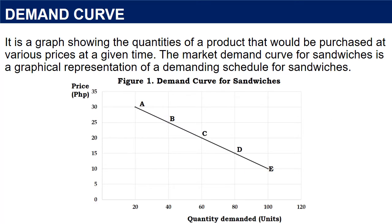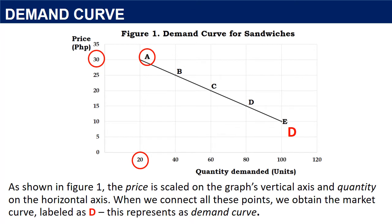A demand curve is a graph showing the quantities of a product that would be purchased at various prices at a given time. The market demand curve for sandwiches is a graphical representation of the demand schedule. As shown in Figure 1, the price is scaled on the graph's vertical axis and quantity on the horizontal axis. Each point on the curve shows the number of sandwiches that consumers would choose to buy at a particular price. In situation A, at 30 pesos consumers would buy 20 sandwiches. Situation B represents 40 sandwiches at 40 pesos, while in situation C, consumers will buy 60 sandwiches at 20 pesos. When we connect all these points, we obtain the market demand curve, labeled as D.